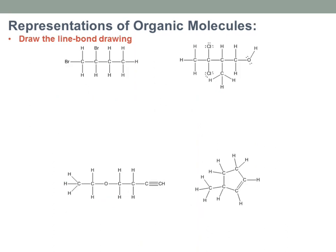Now let's go the other way — drawing a line bond from a Lewis structure. I number the carbons: one, two, three, four — four carbons — so I simply draw a zigzag. I have an end, a bend, another bend, and an end — four carbons. Then I add the non-hydrogen pieces. There's a bromine off carbon one, so I draw a line to Br there, and a bromine off carbon two, so another Br there. That's it — that's 1,2-dibromobutane as a line bond drawing.